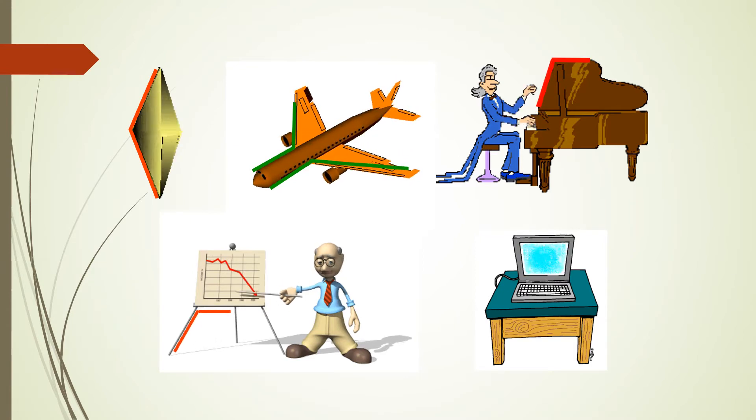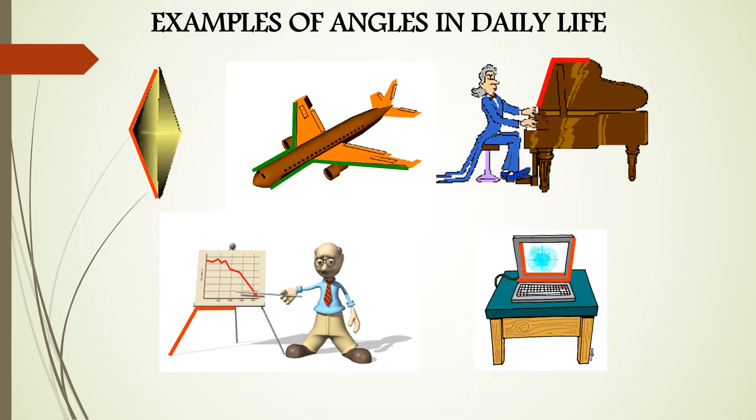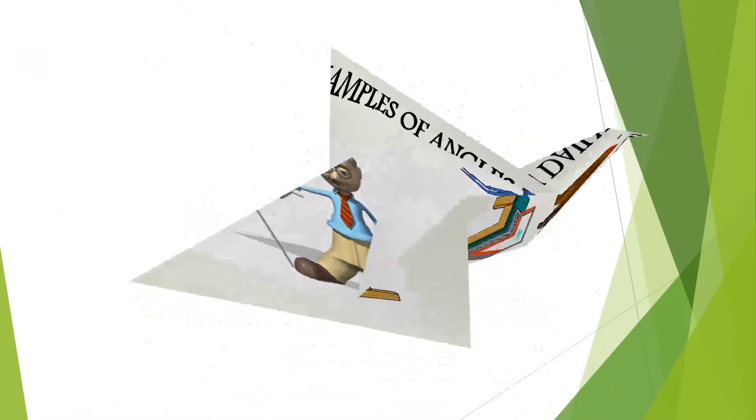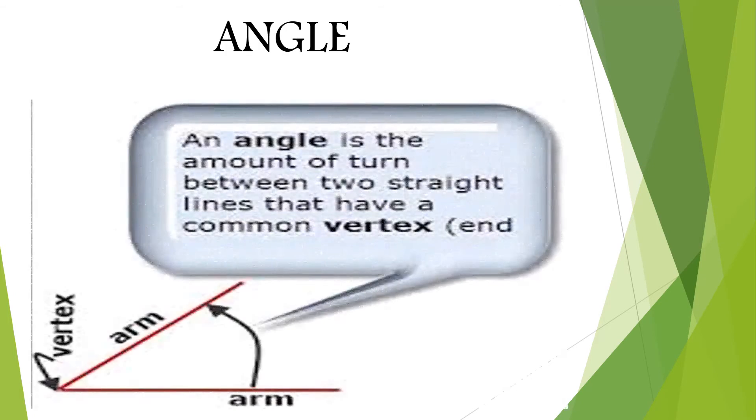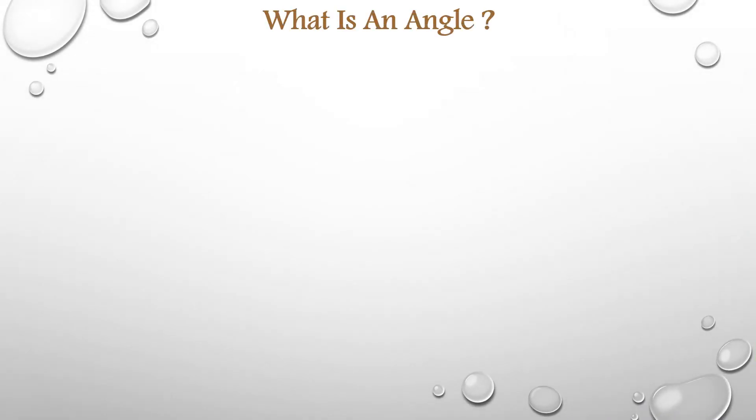Here you can see some more examples of angles you have seen in your daily life. From these pictures what you have understood? An angle is the amount of turn between two straight lines that have a common vertex. Let's define an angle. When two separate rays join with a common endpoint, an angle is formed.